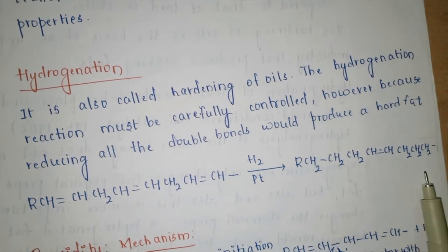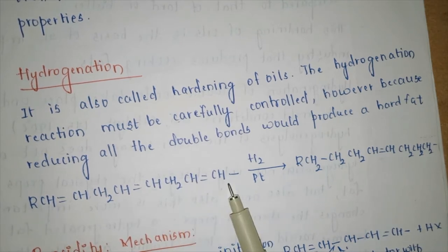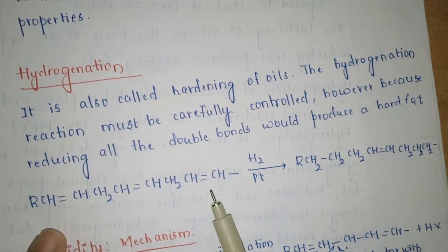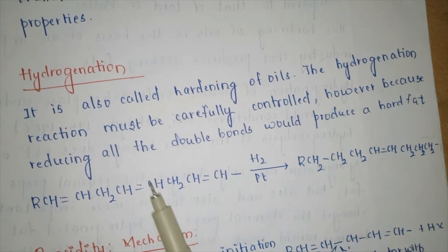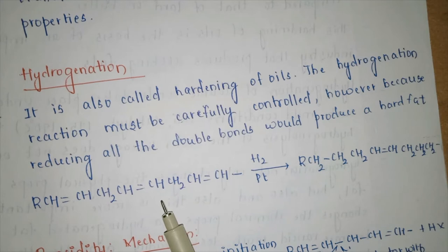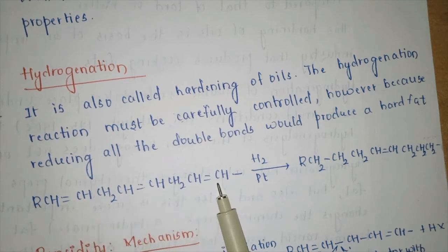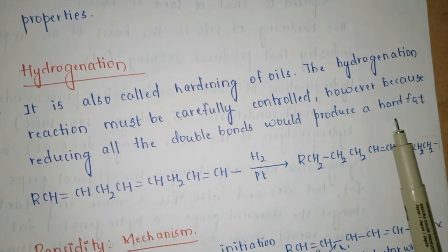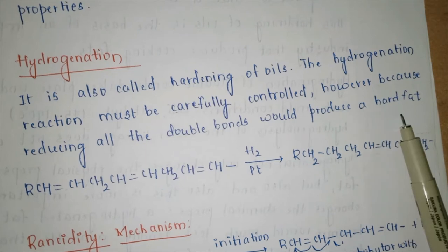We need to control the addition of hydrogen so that rancidity is managed without over-reducing. The double bonds susceptible to rancidity — particularly the terminal end double bonds — are more susceptible to atmospheric oxygen attack and need to be reduced using platinum as catalyst. The middle, highly-substituted double bond does not easily get rancid, so it is left unreduced, giving a dalda-like or butter-like texture rather than a hard fat.